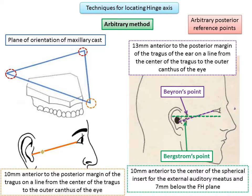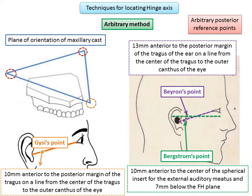Similar to Behrens' point, Geices' point is marked on a line from the outer canthus of the eye to the tragus of the ear, taking a point 10 millimeters anterior to the posterior margin of the tragus. Out of all these points, Geices' point is the most commonly used today. Behrens' point is the second most accurate posterior reference point, whereas Birdstrom's point is found to be most frequently closest to the hinge axis. Behrens' point is commonly used with the fascia type articulator.